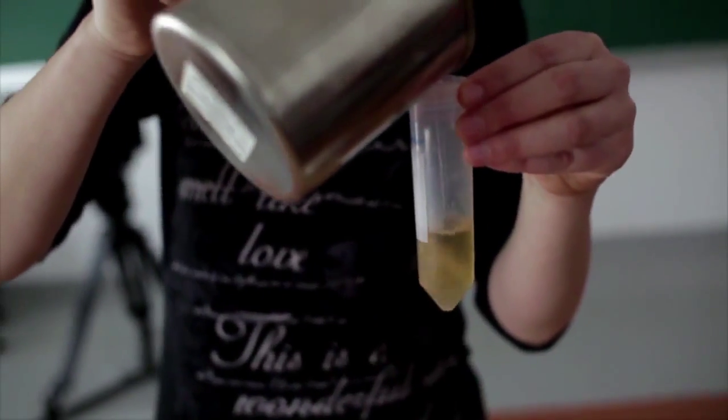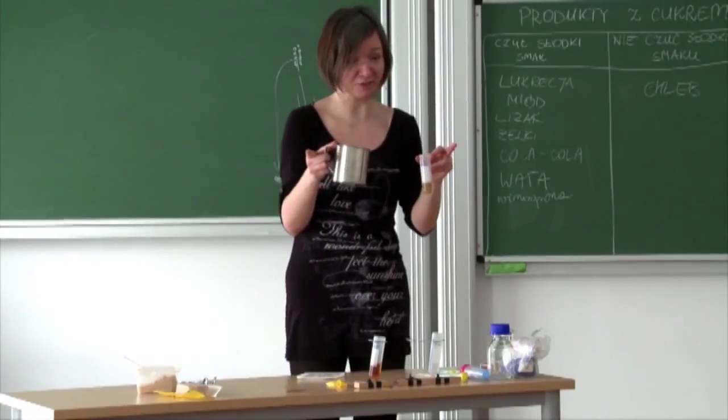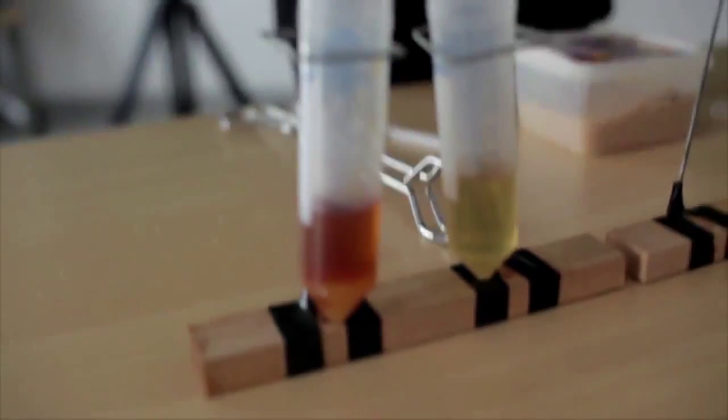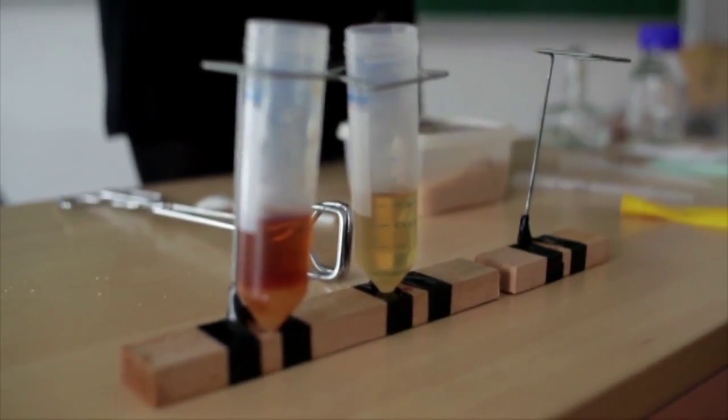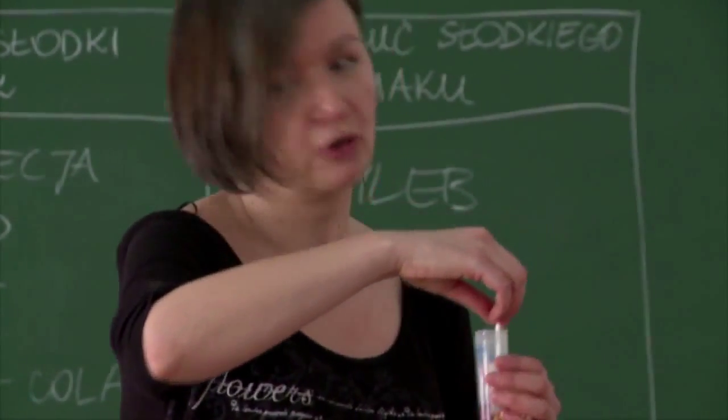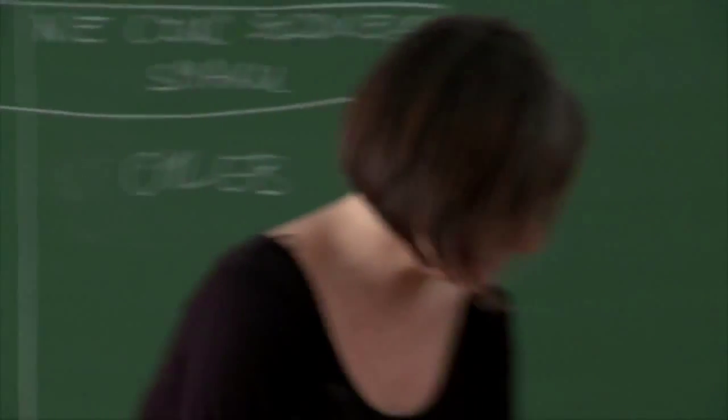Next, we pour the same amount of warm water into each container. We see at once that the liquid acquires a lighter or darker color depending on the amount of sugar. Then we mix the solution in the containers with a stirrer so that the sugar dissolves.